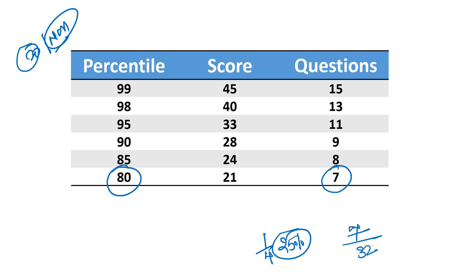I'll tell you one more thing that hasn't been told to you by any mentor. This analysis I'm telling you today is based on 2016 and 2017 CAT data. In the 2017 CAT workshop, I told my students that in 2016 the 80 percentile cutoff was 8 questions. But 2016 CAT LRDI was easier than 2017 CAT LRDI. What happens is, when your section becomes a bit tougher, your number of attempts goes down but your percentile goes up. So in 2017 LRDI, which was tougher than 2016, one question got reduced but your percentile remained the same.